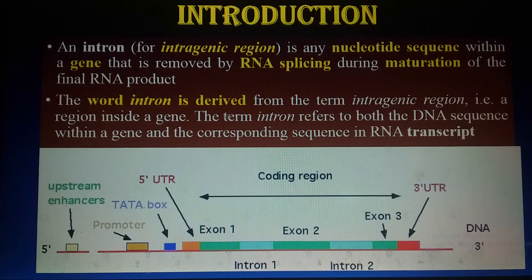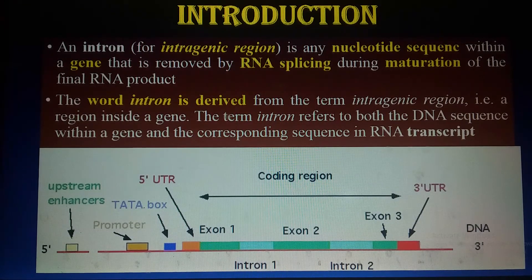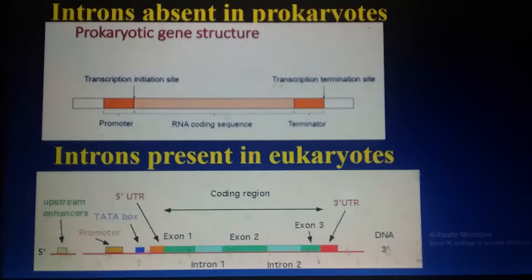Exons are those regions in a gene which encode for proteins — meaning messenger RNA formation undergoes transcription and then translation, which means protein formation. But introns do not take any part in protein formation or translation.